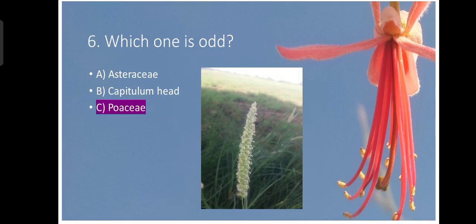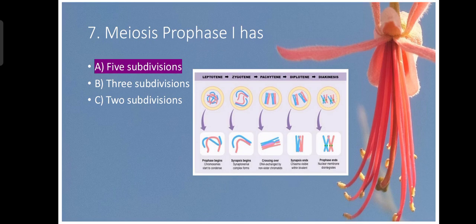Which one is odd? This is a simple question. Asteraceae and the Capitulum head. Capitulum head that is the type of inflorescence which is found in Asteraceae. So they both belong to the same group. Poaceae that is odd. Meiosis prophase one has five subdivisions. Very easy question.